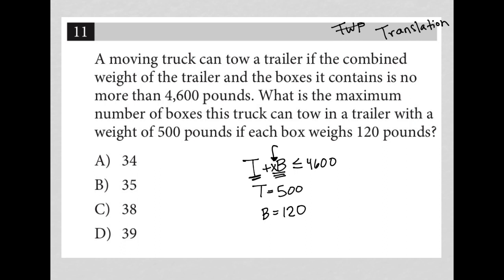So now that I have all this information translated from my question, I can plug in the details. So instead of T, I'm gonna call it 500. Plus instead of X times B, I'm gonna call that 120X. Again, X representing the number of boxes.